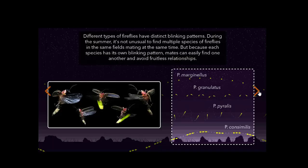Different types of fireflies have distinct blinking patterns. During the summer, it's not unusual to find multiple species in the same fields mating at the same time. But because each species has its own blinking pattern, mates can easily find one another and avoid fruitless relationships.